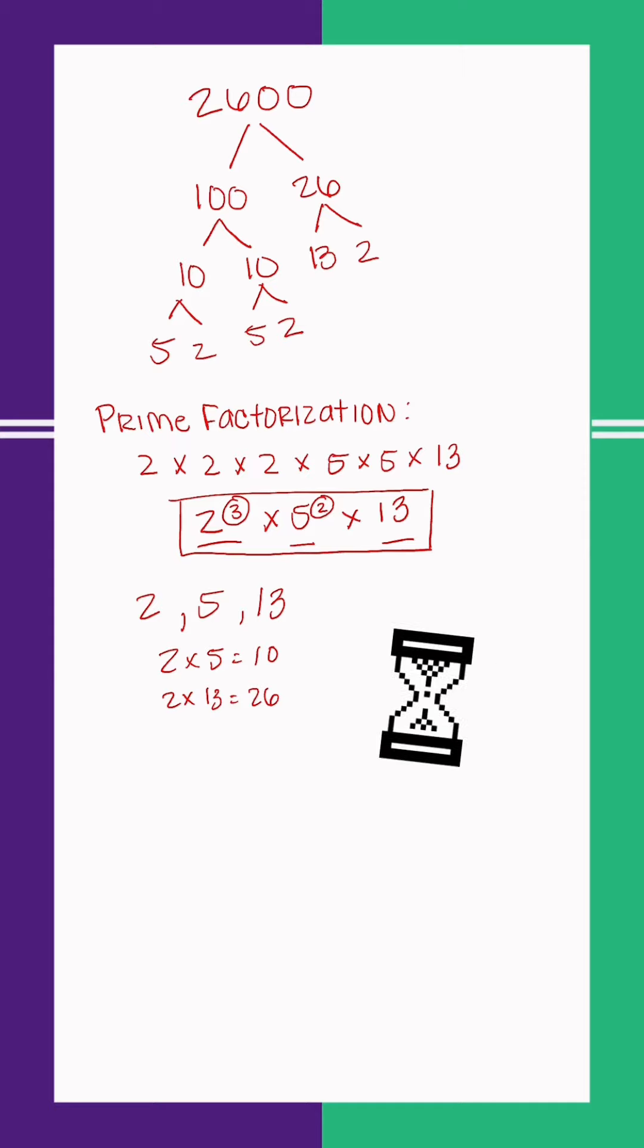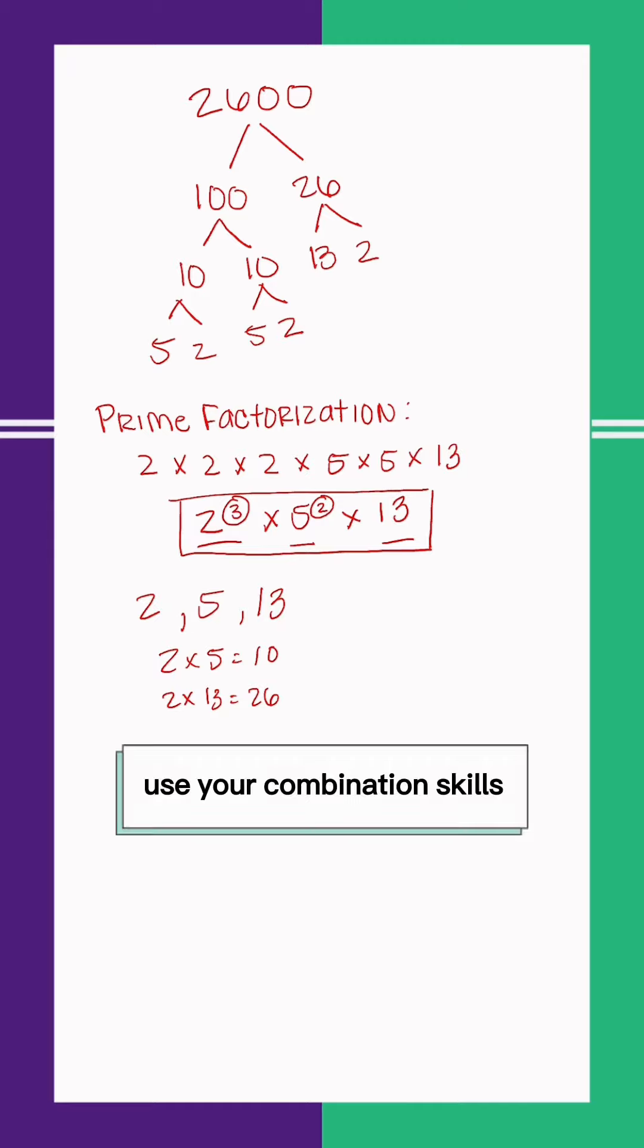This is just a really long process to have to come up with all of the different combinations of 2, 3s, 5, 2s, and 1, 13. So I'm going to use my combination skills to figure out how many different combinations of numbers I could have.